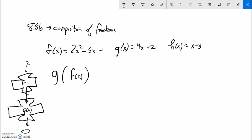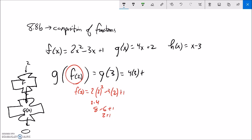So let's actually do this and see what happens. So f of 2 is 2 times input squared minus 3 times input plus 1. So 2 squared is 4. That's 8 minus 6 plus 1. 8 minus 6 is 2 plus 1 is 3. So f of 2 is 3. So this is the same as saying g of 3 because we've evaluated f of 2. So now I plug 3 into g. 4 times 3 plus 2. 12 plus 2 is 14.